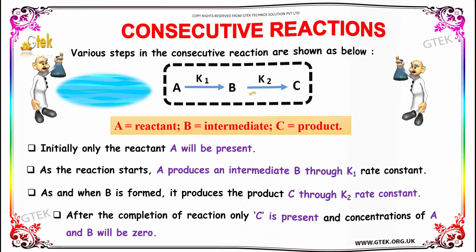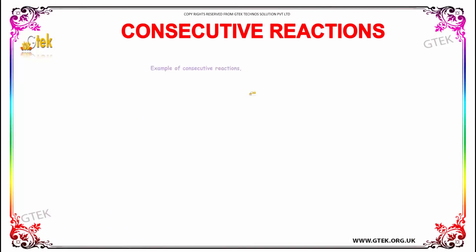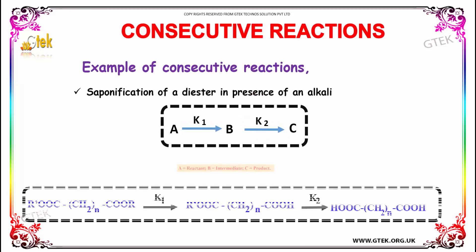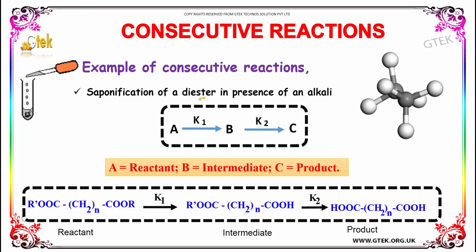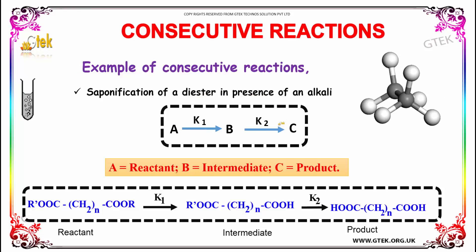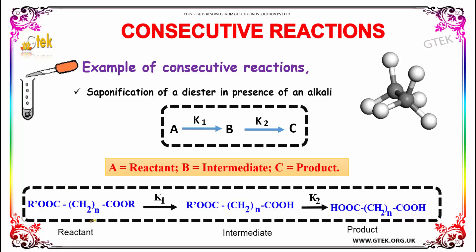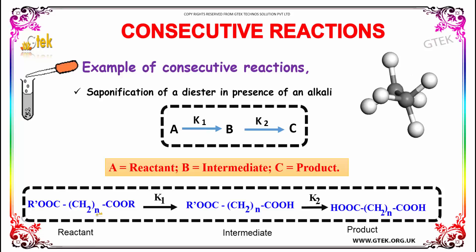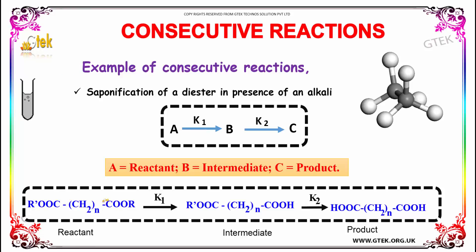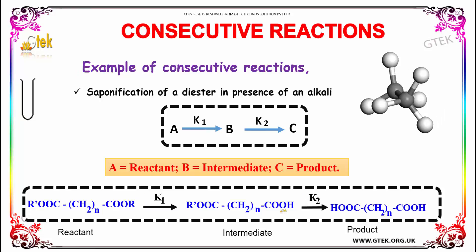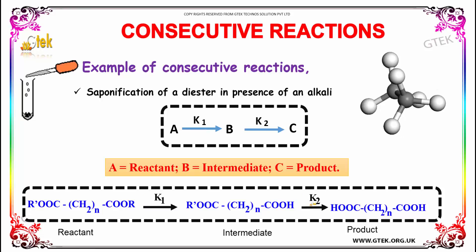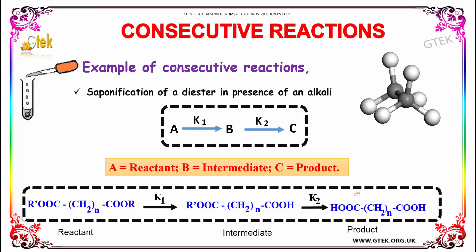Let's move on to a simple example: the saponification of a diester in the presence of alkali. We have a diethyl diester. In the presence of alkali with rate constant K1, the ester group R is replaced by OH, giving the mono-acid intermediate. In the presence of more alkali, the second R is also replaced by OH.